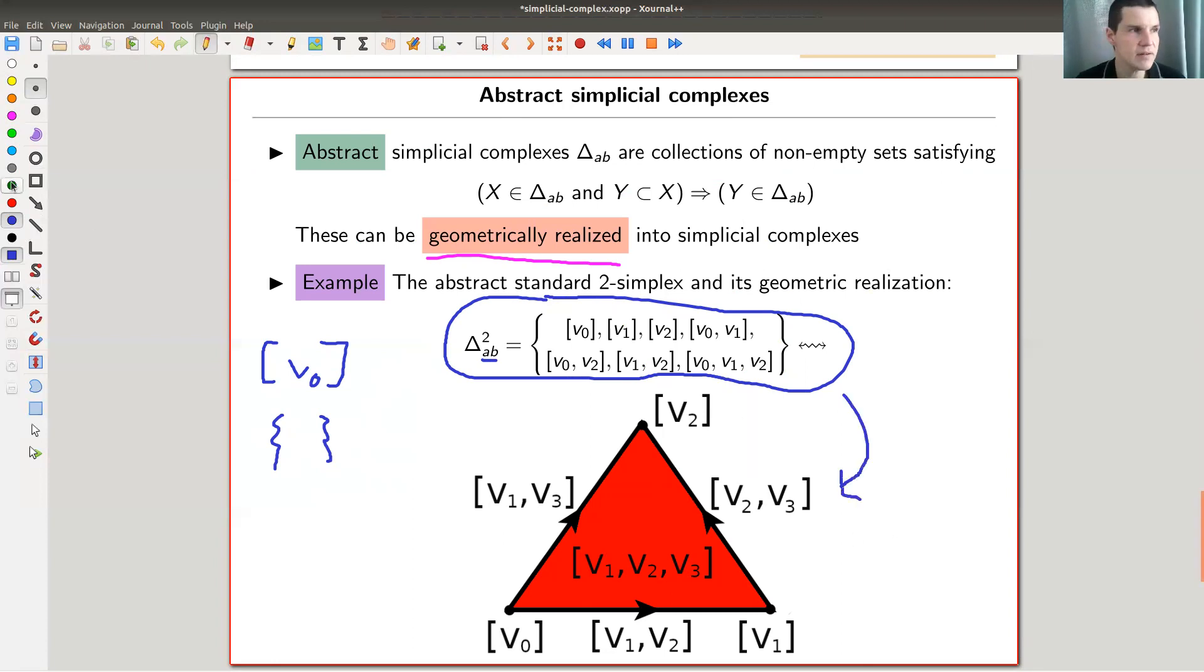And they can be geometrically realized in this picture. So the things of dimension one, the things corresponding to one object, they are just the vertices of my triangle. The things that correspond to two are the edges of my triangle, including some orientation. So this picture actually is horribly false. This should be zero and one, this should be one and two, and this should be zero and two. So we just read off the corners.